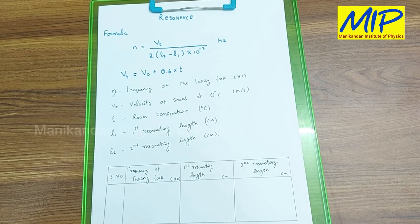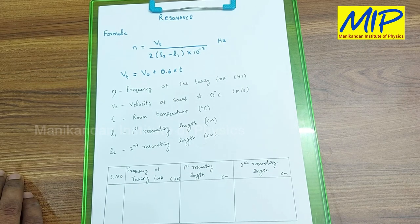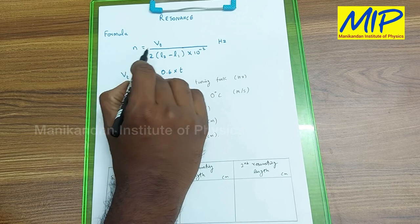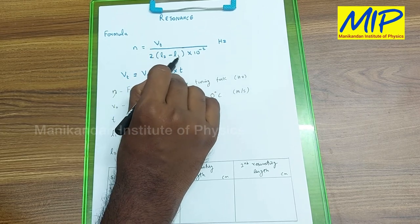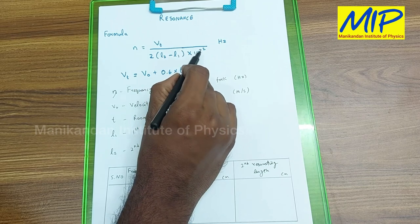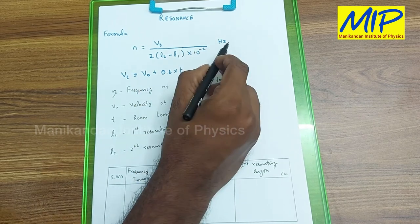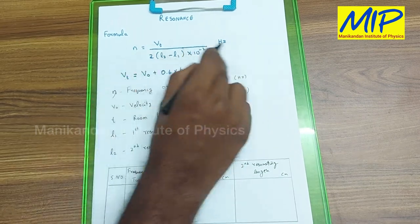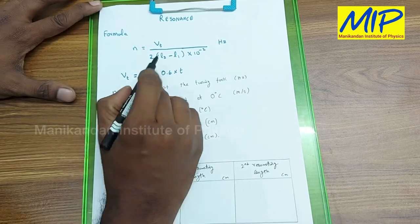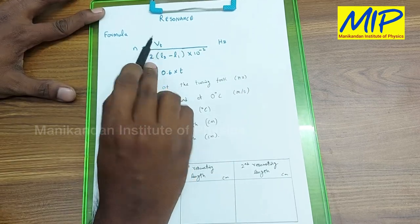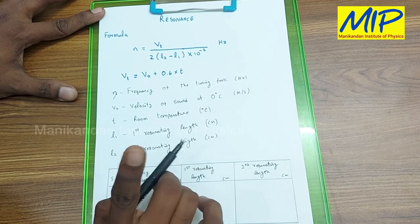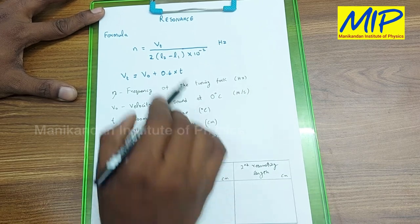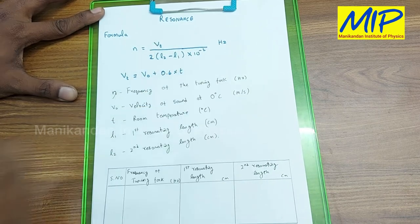To determine the frequency of the tuning fork, we have a formula: N equals V of T divided by 2 into (L2 minus L1) into 10 power minus 2. The unit of frequency is hertz. V of T is the velocity of sound at that particular temperature, where T is my temperature.